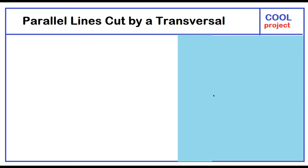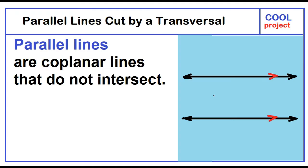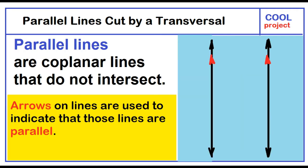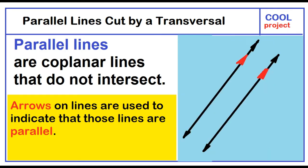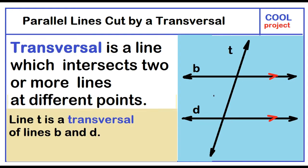Parallel lines cut by a transversal. Parallel lines are co-planar lines that do not intersect. Arrows on lines are used to indicate that those lines are parallel. A transversal is a line which intersects two or more lines at different points. Line T is a transversal of lines B and D.